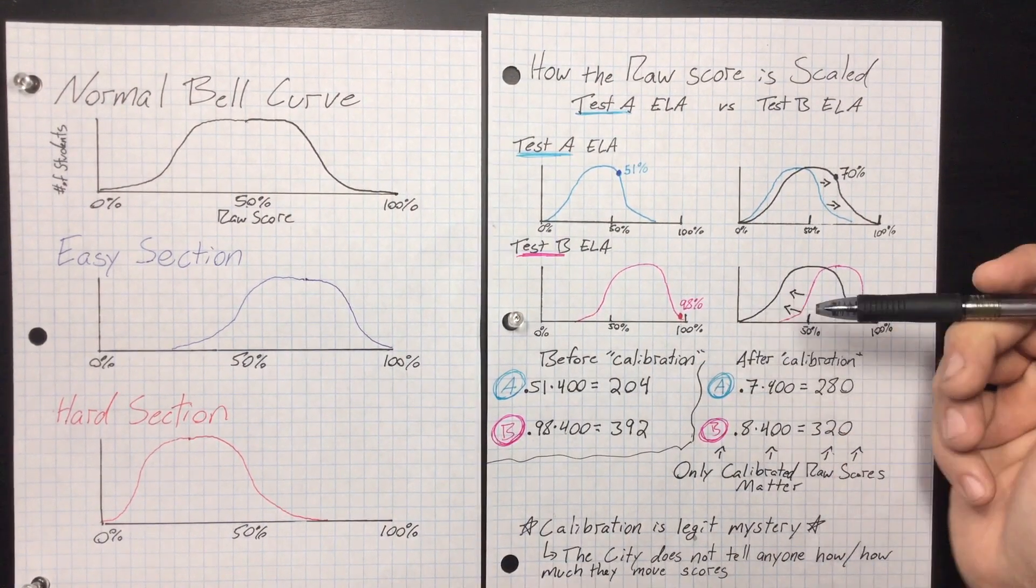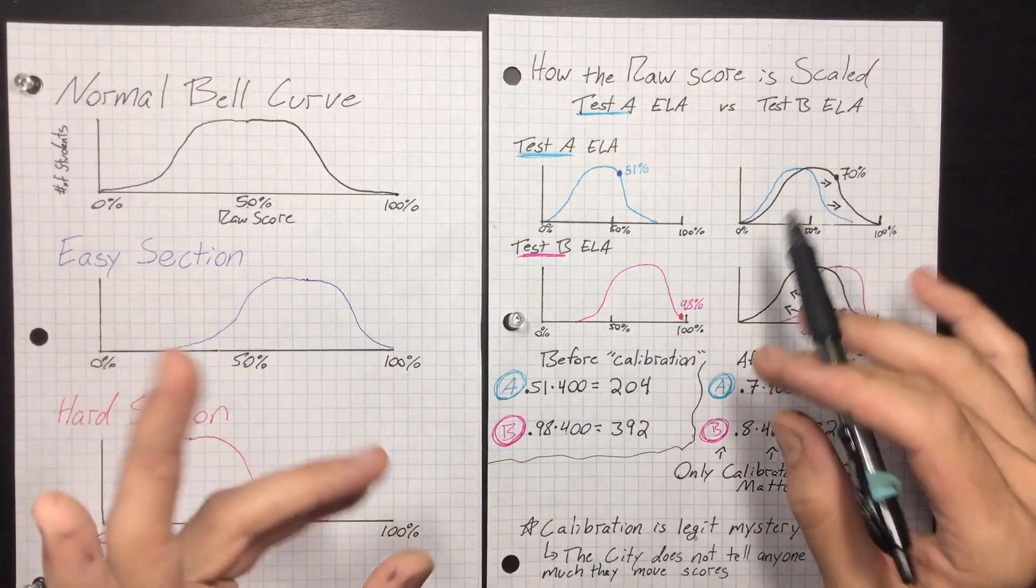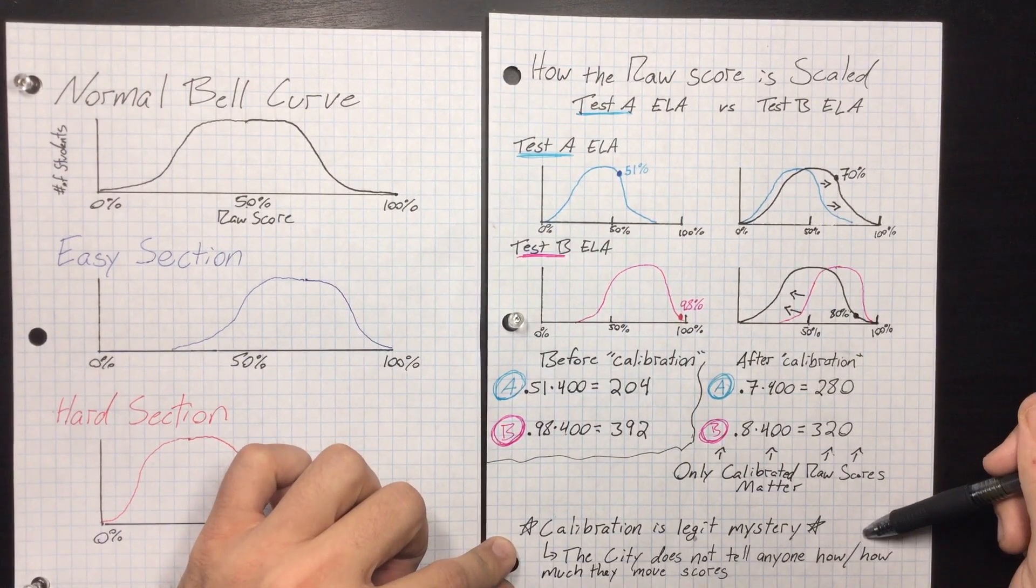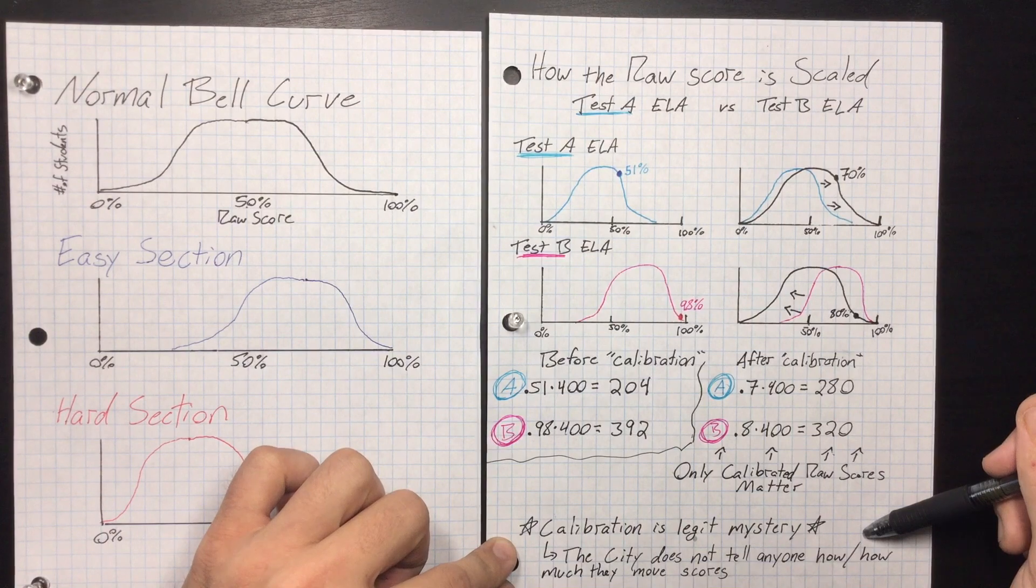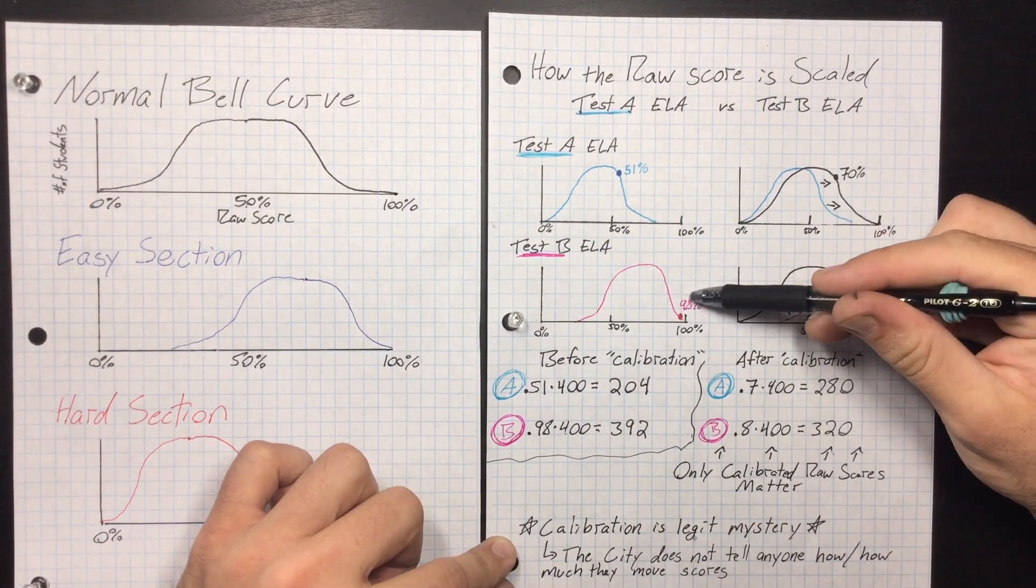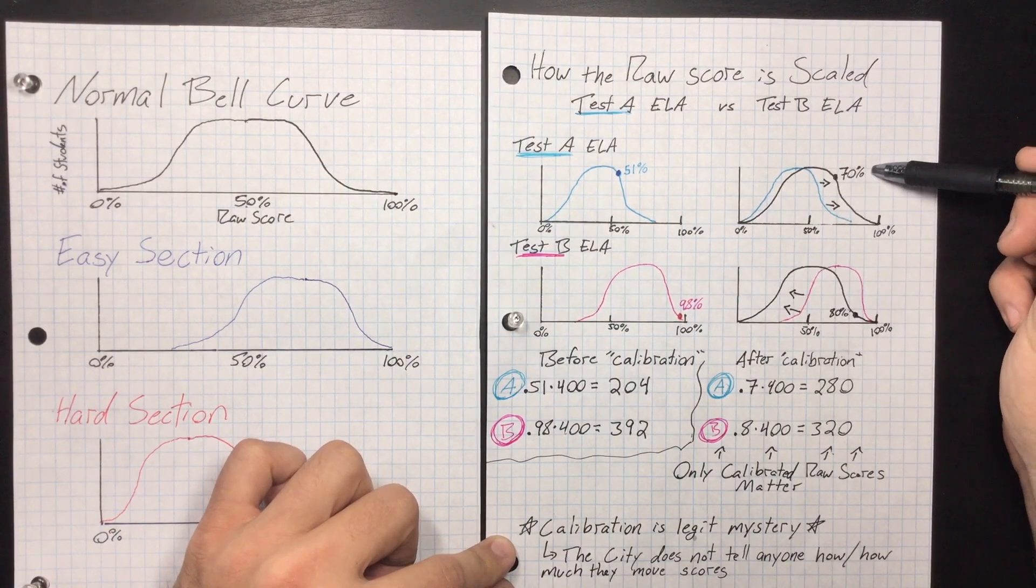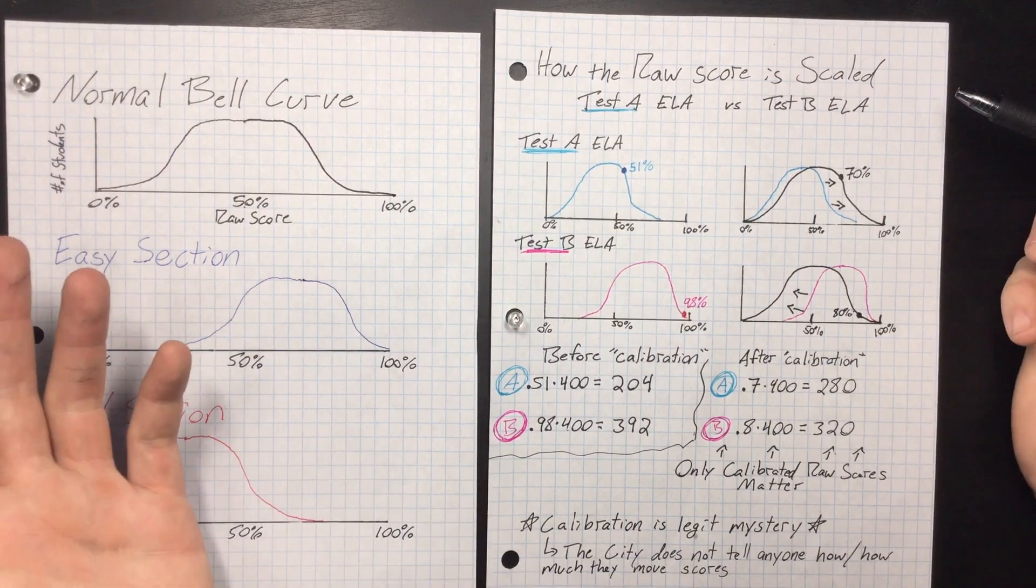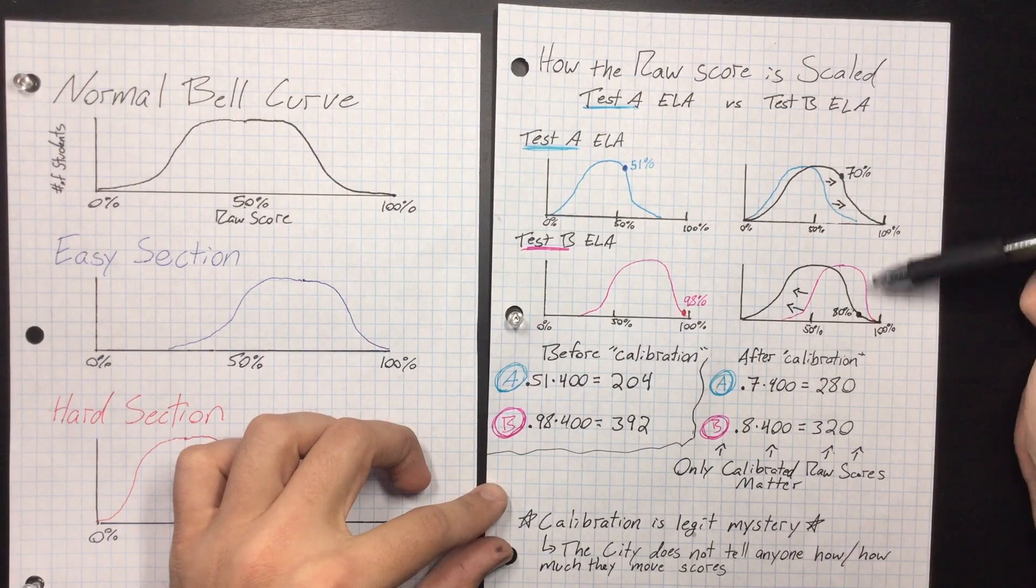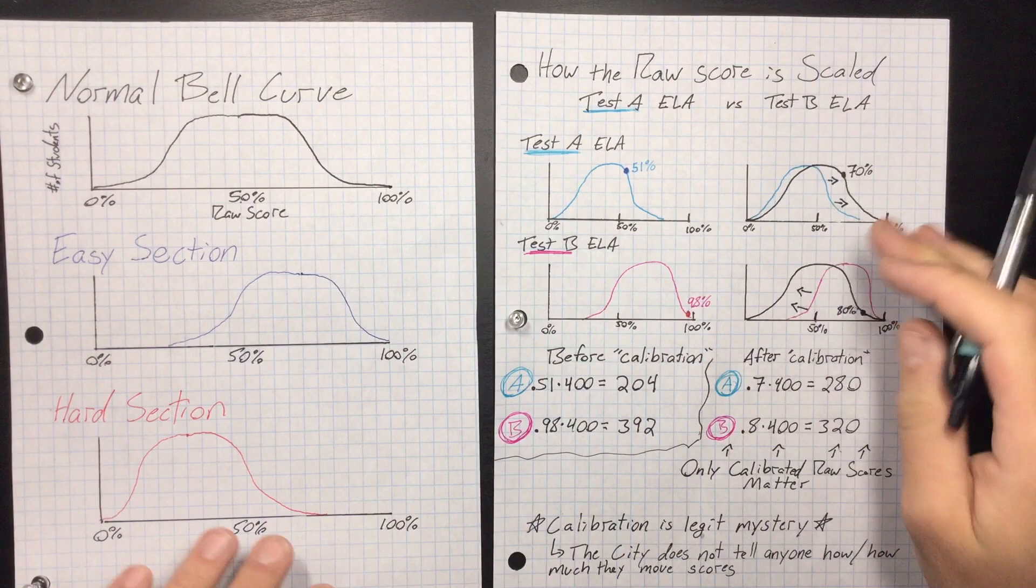Now calibration is legit mystery. People will say they know how it's calibrated, people have been given hints or whatever, but the city does not tell anyone how or how much they move scores. This is a big mystery. So if I know that they move the score down 18%, but here they move the score up 19%, they're allowed to do that. And they're the ones that decide how much they move scores up to fit this normal bell curve. So that's a little bit of what the mystery is.